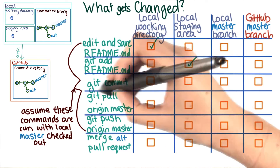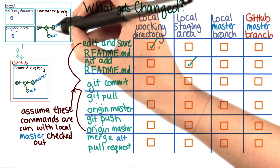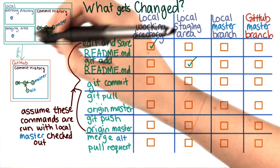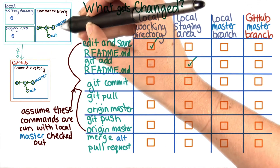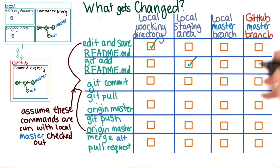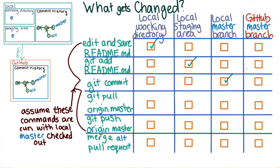Then we have git commit. Running git commit will create a commit with the changes from the staging area and update the master branch.